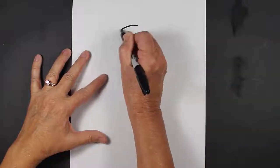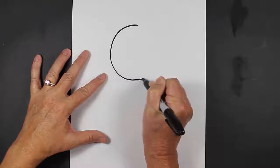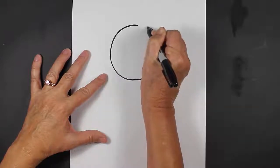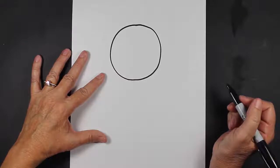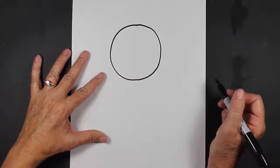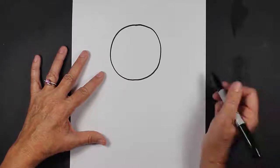The first thing that you'll want to do is make a circle. Do the best that you can with your circle. I know circles are a little bit challenging for people who haven't practiced in a long time, but just keep practicing and you'll get better and better.